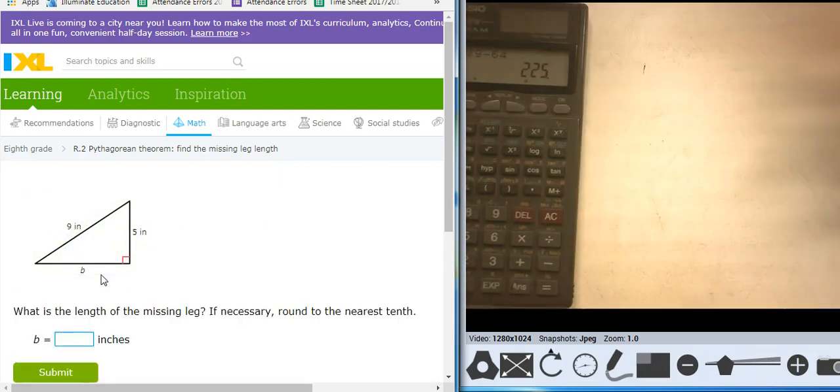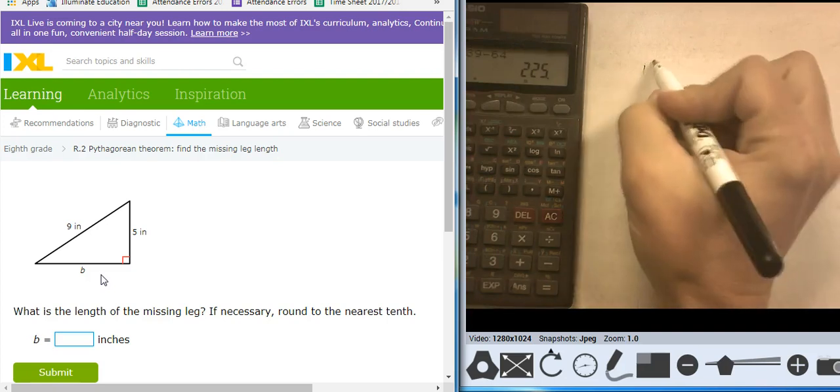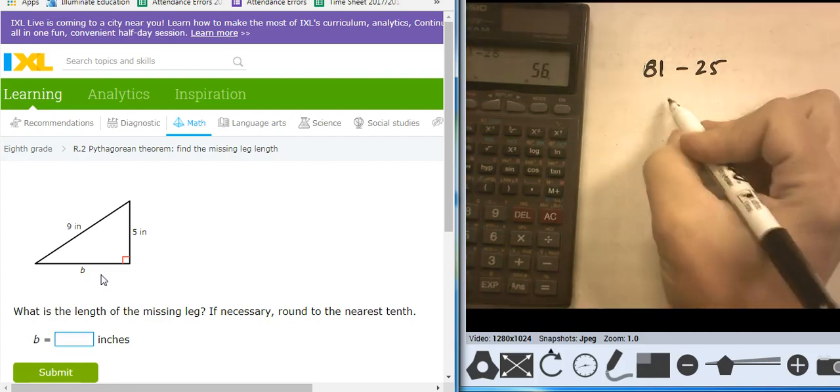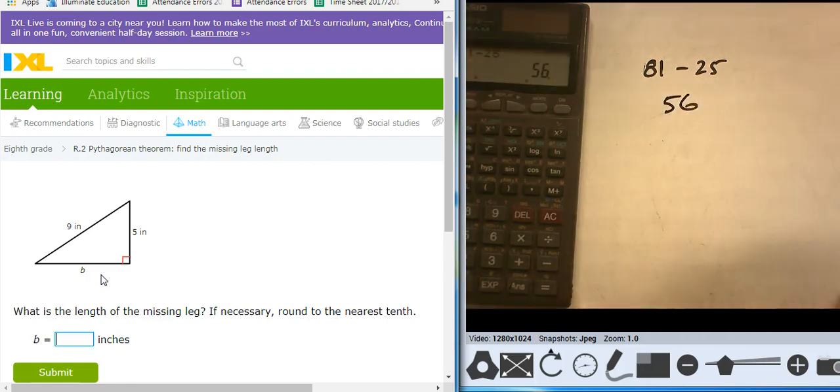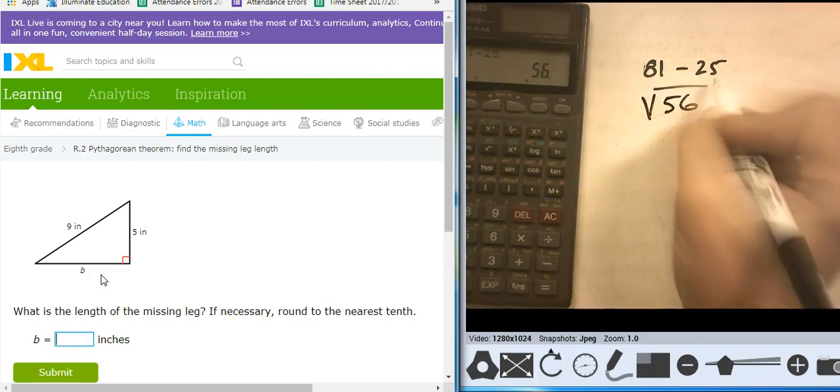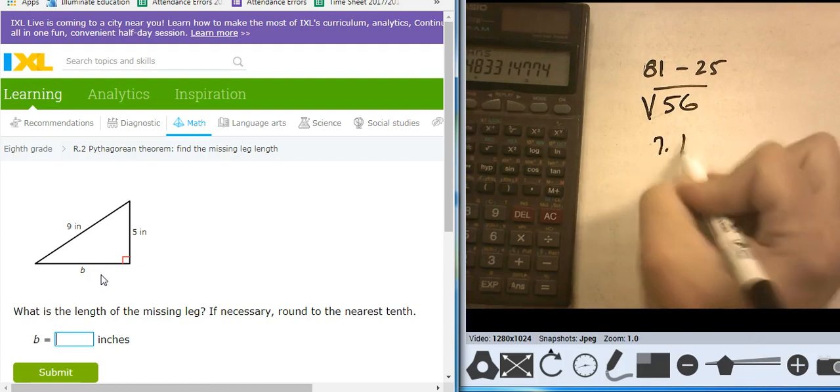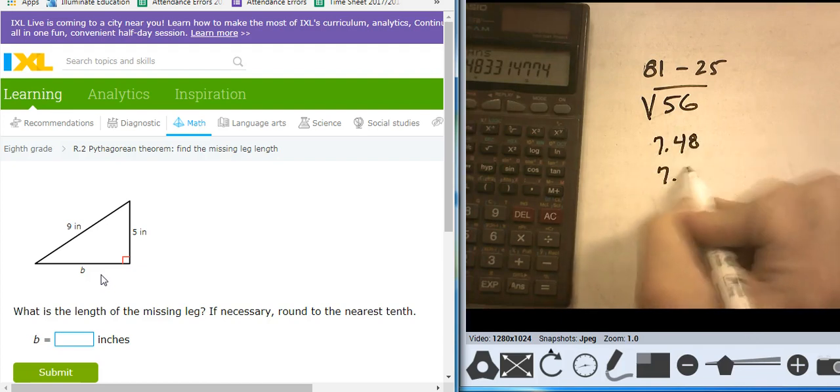It's going to be 9 squared minus 5 squared, so 81 minus 25, takes me to 56, and now I'm in the decimal world, aren't I? If I read the instructions, it says round it to the nearest tenth, so the square root of 56 is 7.48, takes me to 7.5.